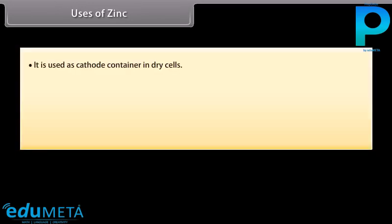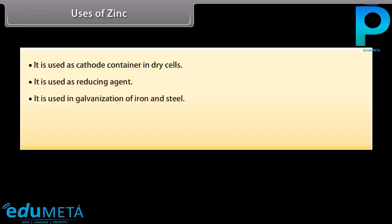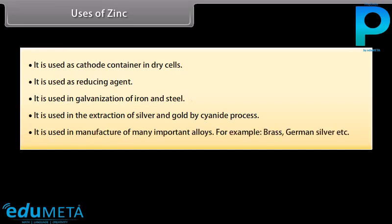Uses of Zinc: It is used as cathode container in dry cells and as a reducing agent. It is used in galvanization of iron and steel, and in the extraction of silver and gold by the cyanide process. It is used in the manufacture of many important alloys, for example brass and German silver.